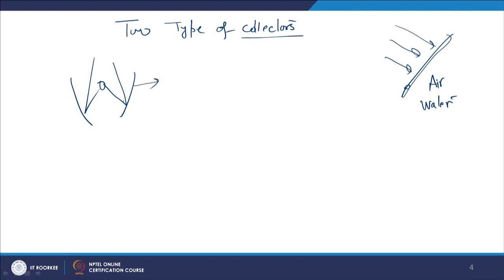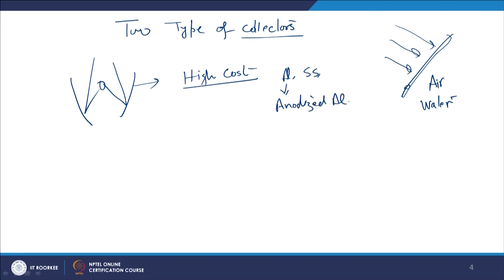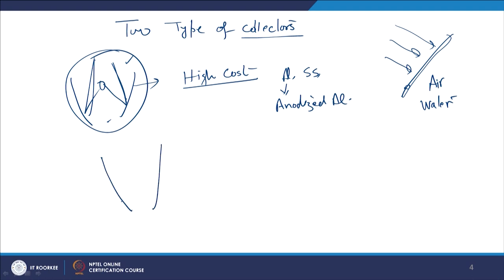Concentrating collectors have higher cost compared to flat plate collectors; they are normally made of aluminum alloy or anodized aluminum or stainless steel. For concentrating collectors, strong direct normal radiation is required — they will not work for diffuse radiations. So in partly cloudy weather they will not be very effective. Normally a tracking system is also required so that the collector moves with and tracks the movement of the sun.